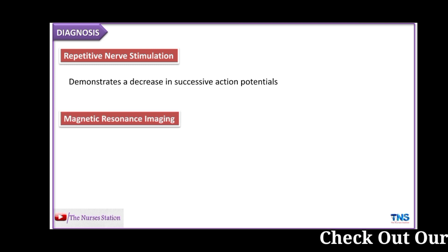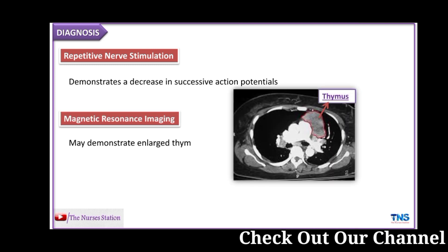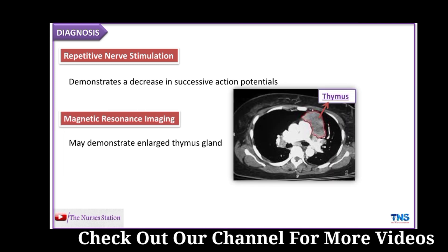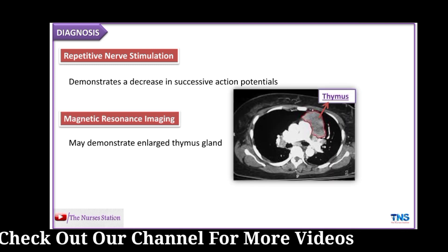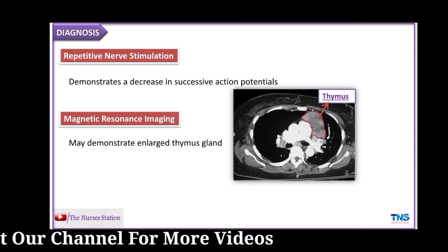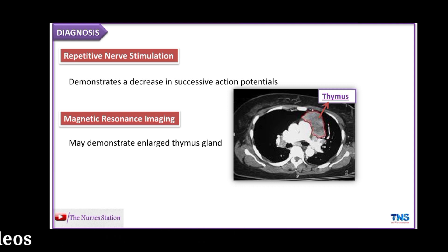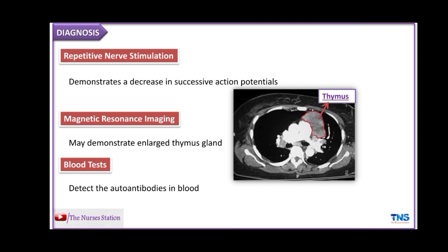The next is MRI of the thymus gland, which may demonstrate an enlarged thymus gland if the thymus is the site of production of autoantibodies. The next is a blood test which detects the autoantibodies in the blood and confirms the diagnosis.